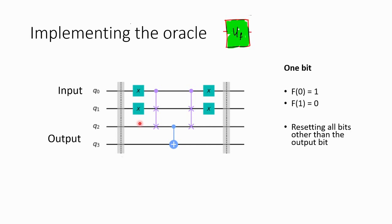What we do is we start applying all these gates in the same order as we first applied them. When we do this, q0, q1, and q2 get reset. Now there is another issue — if q0, q1, and q2 get reset, we don't have the information in q2, because whatever information we had in q2 is the same as before the circuit.